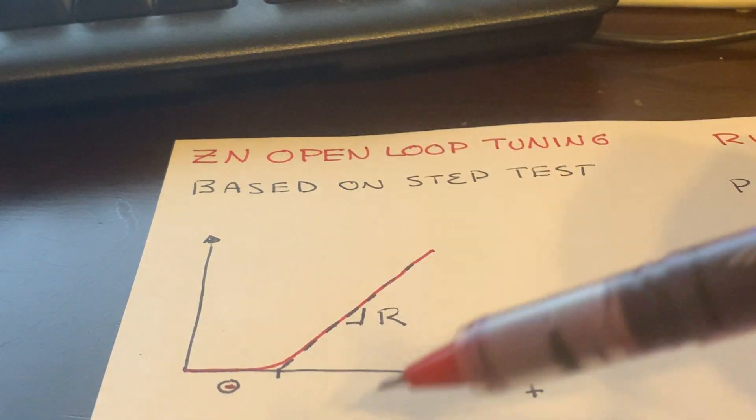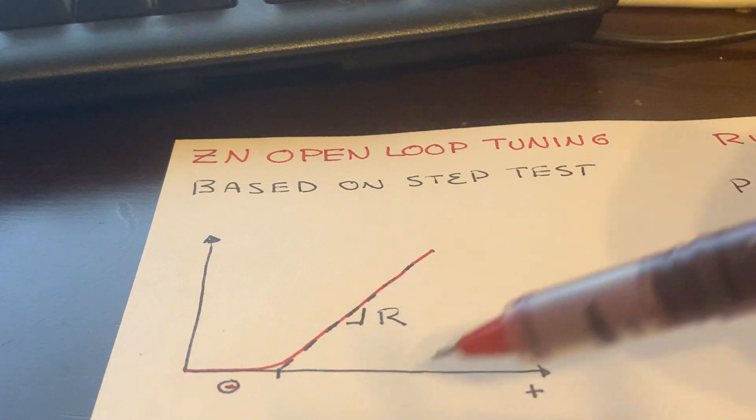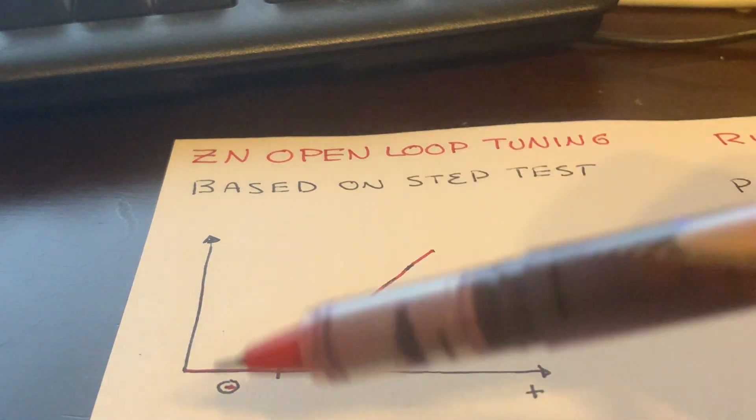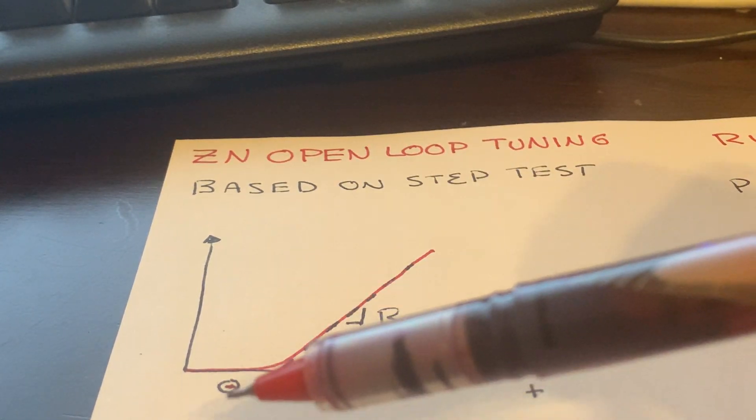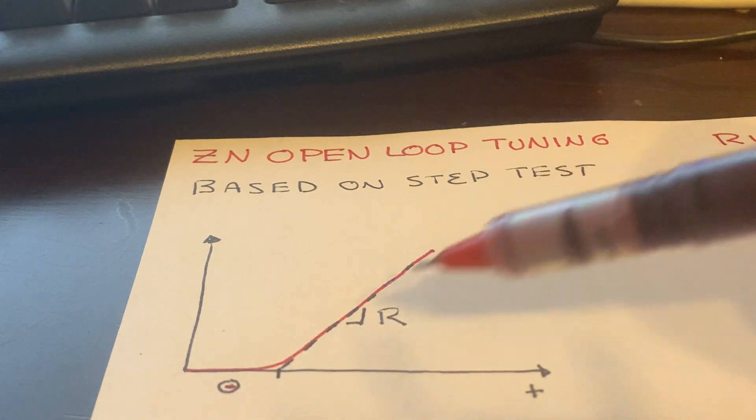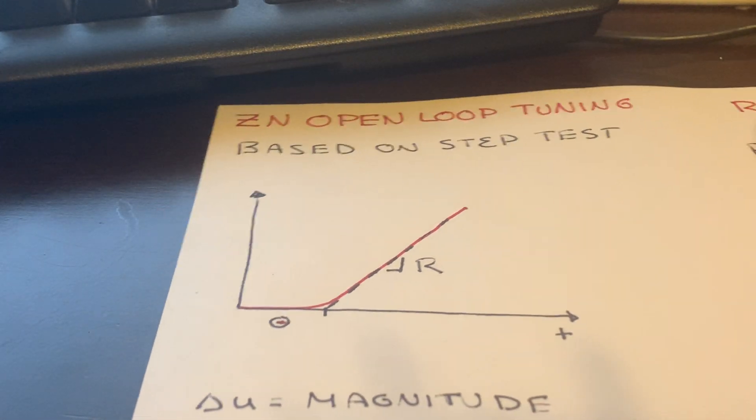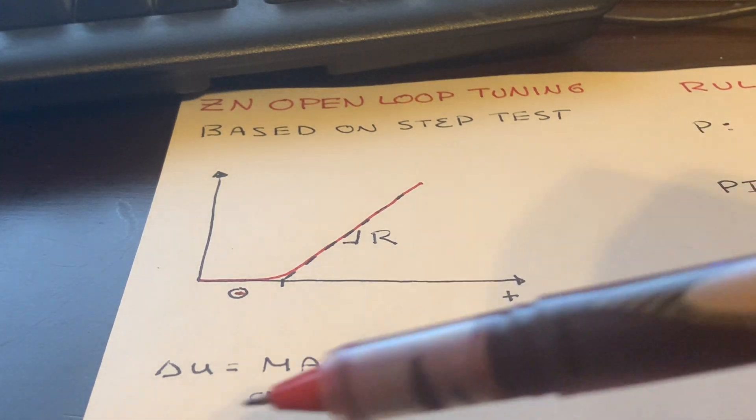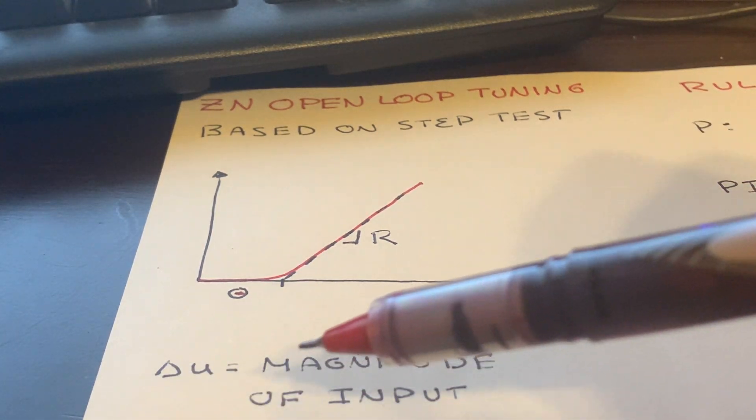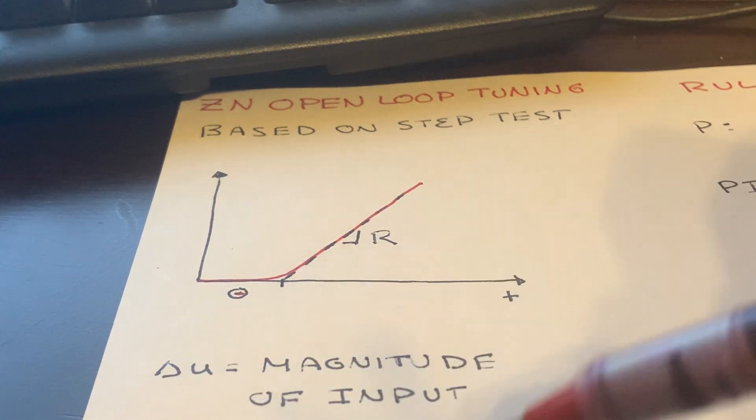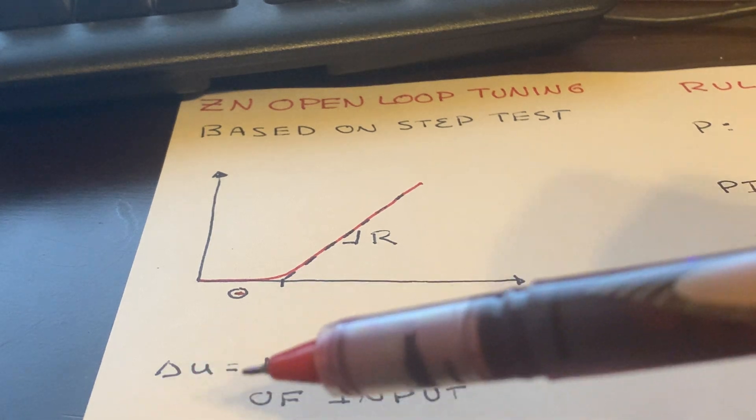But in this open loop tuning, we don't actually care about the steady state value. We just care about the slope r and the time delay theta. These are estimated from process response curves. The other variable we're interested in is delta u, which is the magnitude of the input. For a unit step test, delta u is equal to 1.